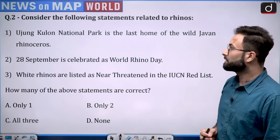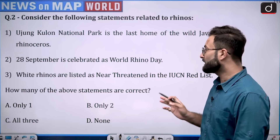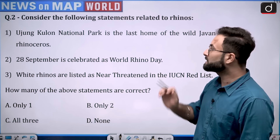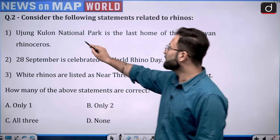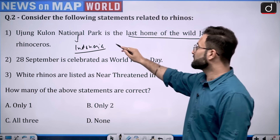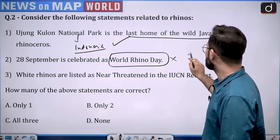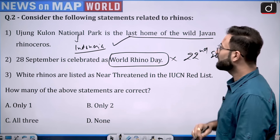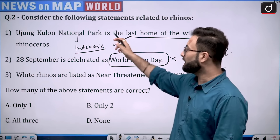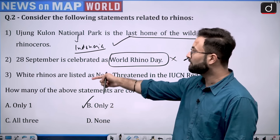Consider the following statements related to rhinos. First: Ujung Kulon National Park is the last home for the wild Javan rhinoceros. Second: 28 September is celebrated as World Rhino Day. Third: white rhinos are listed as near threatened in the IUCN Red List. Coming to statement one — Ujung Kulon National Park is located in Indonesia and it is the last home for the wild Javan rhinos — that is a correct statement. Statement two — 28 September as World Rhino Day — that is incorrect because it is 22nd September. Statement three — white rhinos listed as near threatened in IUCN Red List — that is also correct. So 1 and 3 are correct; option B with only 2 correct statements is your right answer.